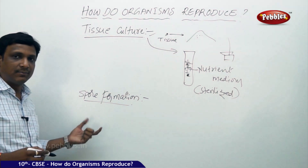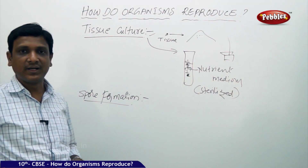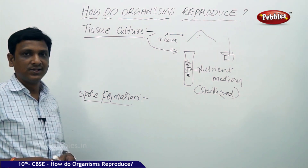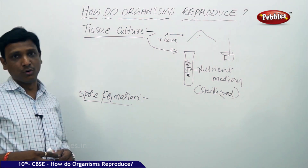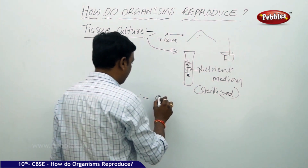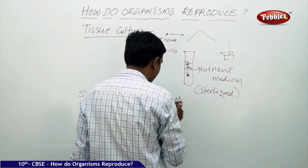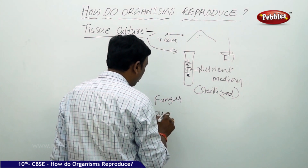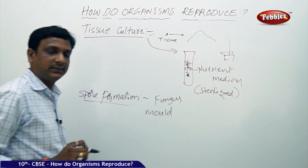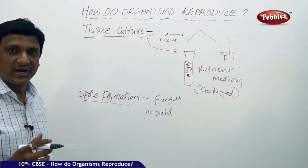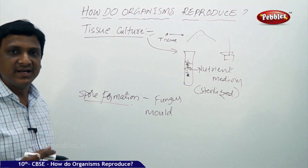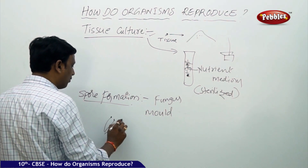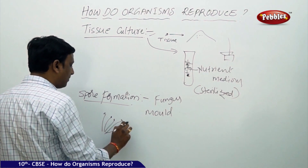Some organisms are produced by spores — this is called spore formation or sporulation. The best example is fungus, and under this we see molds such as bread mold. When some food is made wet and damp and kept in humid conditions, you see hair-like structures growing — this is nothing but bread mold.